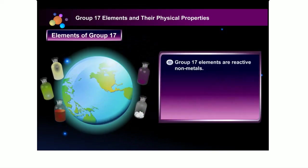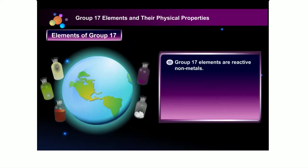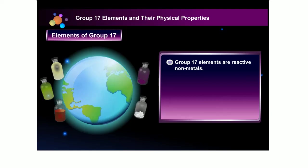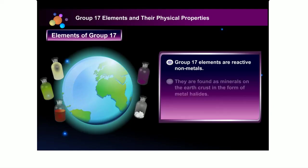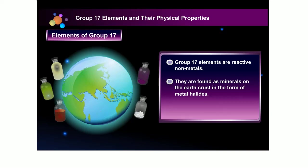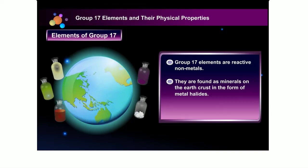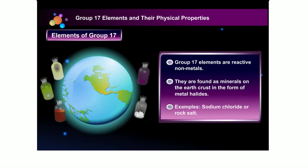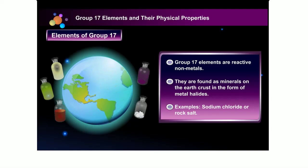Group 17 elements are reactive non-metals. Halogens are found on the Earth's crust in the form of salts called metal halides, such as sodium chloride or rock salt.